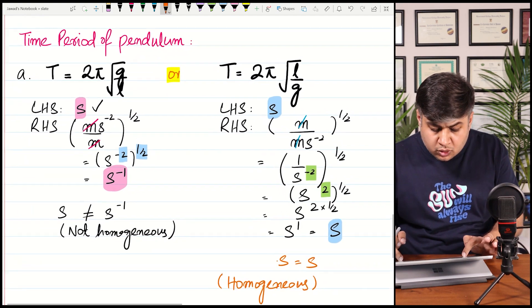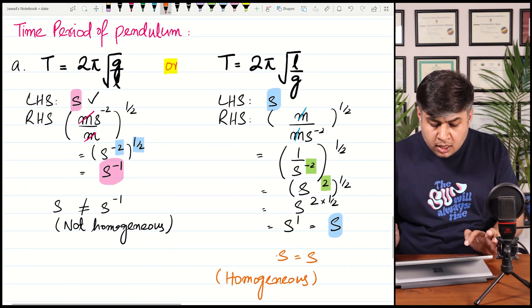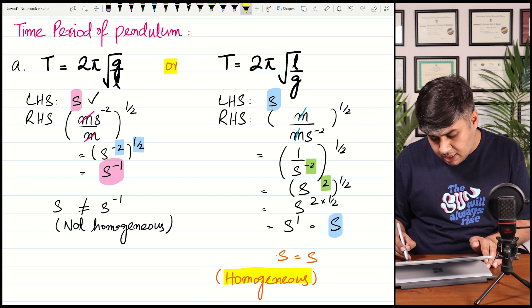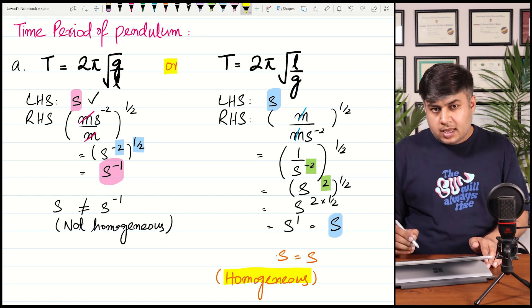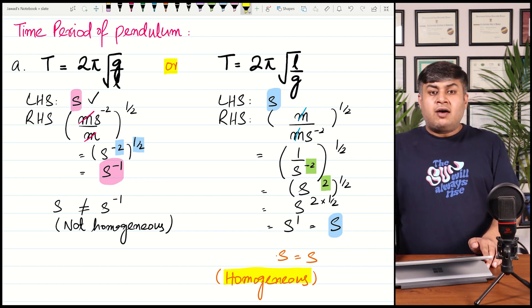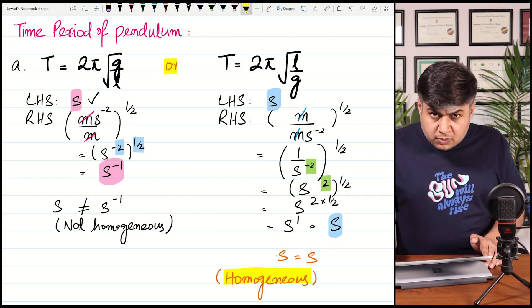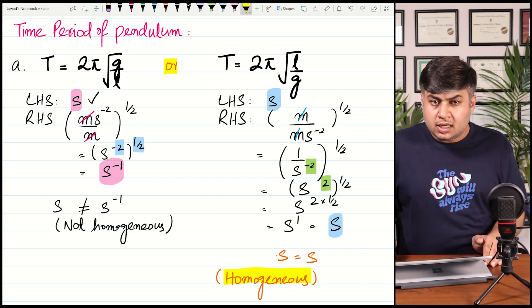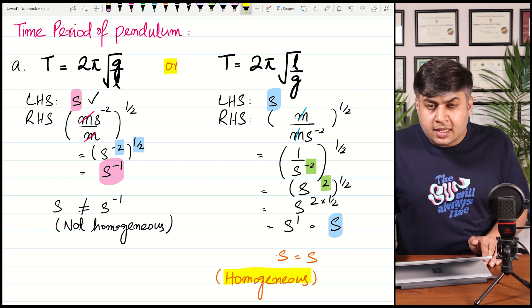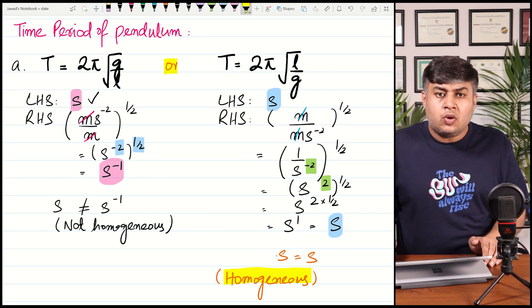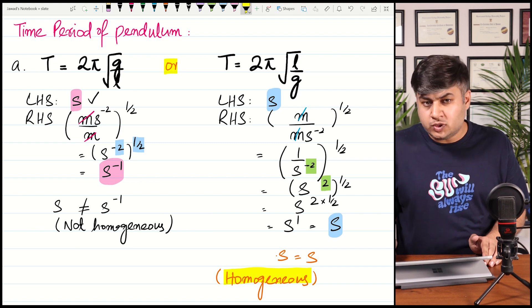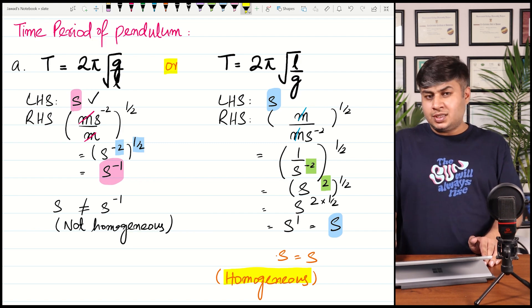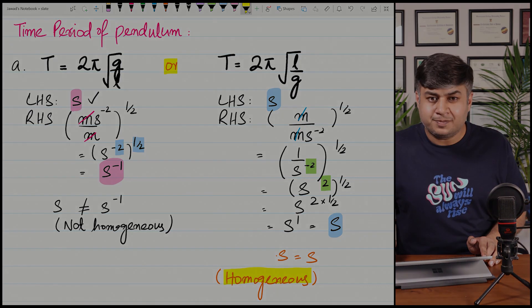So we solved this question and proved that the equation T = 2π√(L/G) is homogeneous while T = 2π√(G/L) is not. This was an introduction to homogeneity of physical equations. In the next video, we will attempt some trickier questions on homogeneity, so stay tuned. Thank you.